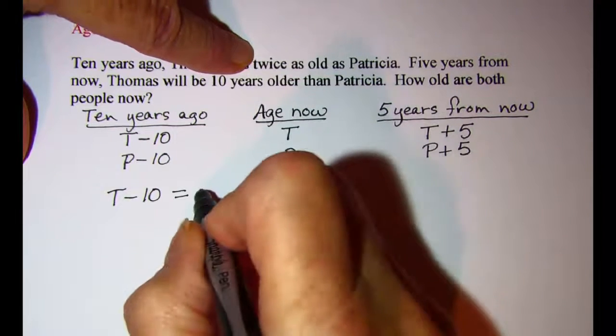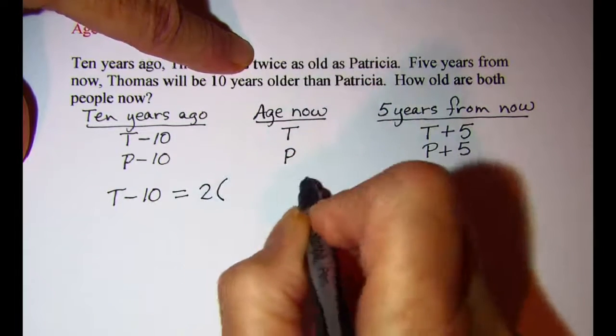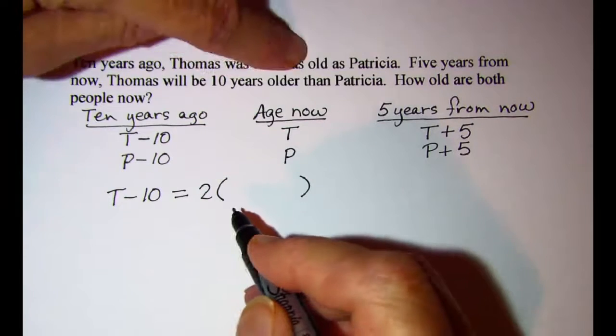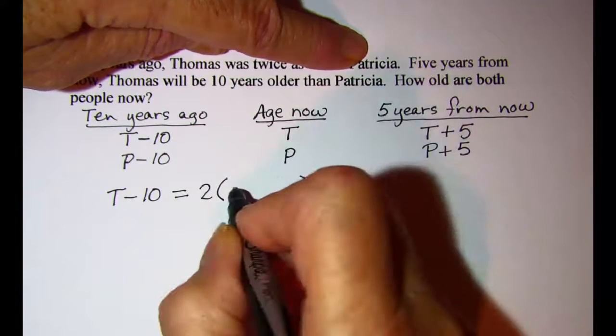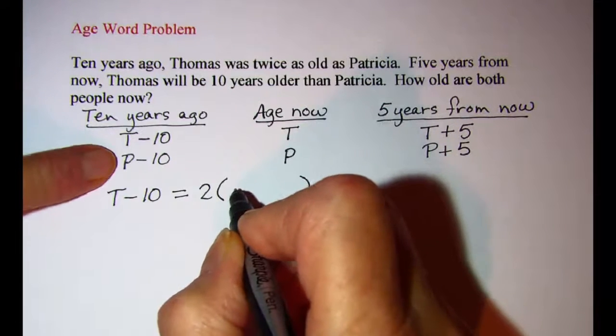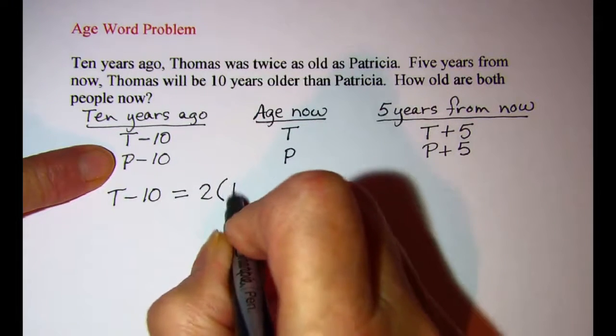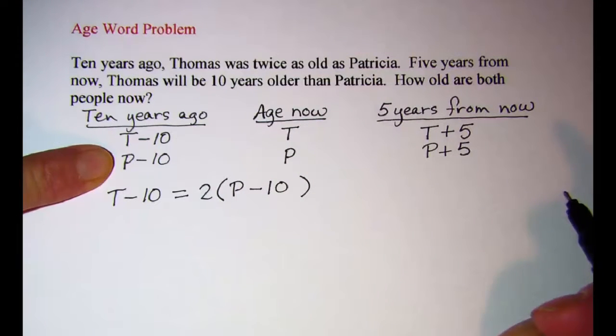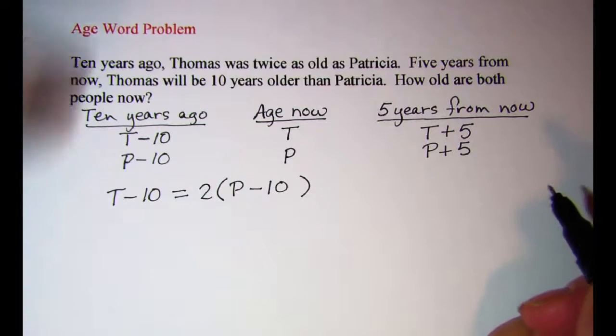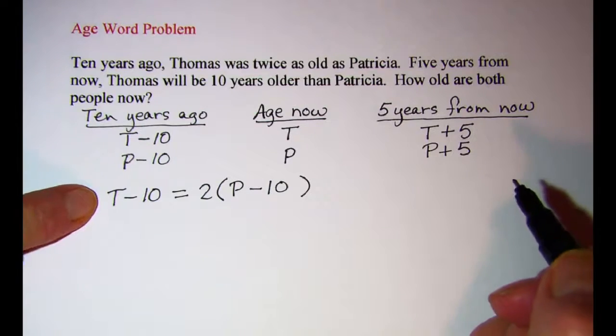Twice, that means two times as old as Patricia. So in the parentheses here, I'm going to put Patricia's age ten years ago, so P minus 10. This is my first equation that I'll be working with.